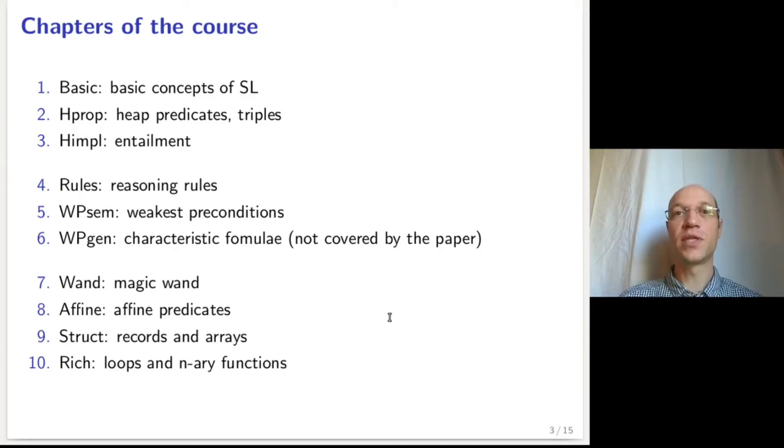The next three chapters focus on the presentation of reasoning rules, either in the form of triples, in the form of weakest preconditions, or in the form of characteristic formulae, which are a form of weakest precondition generator.